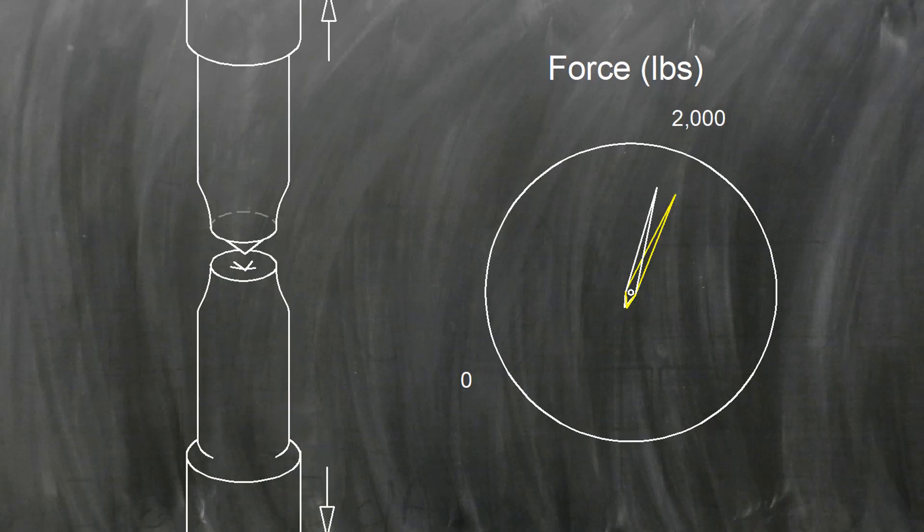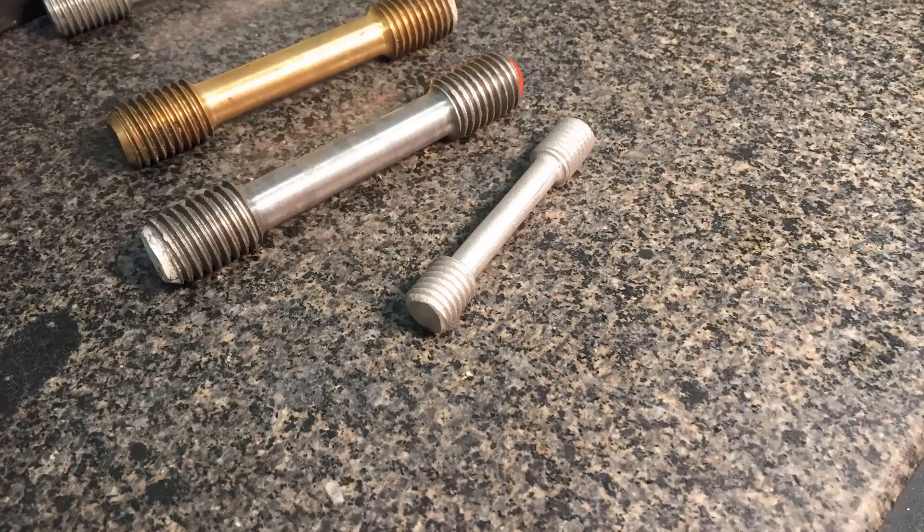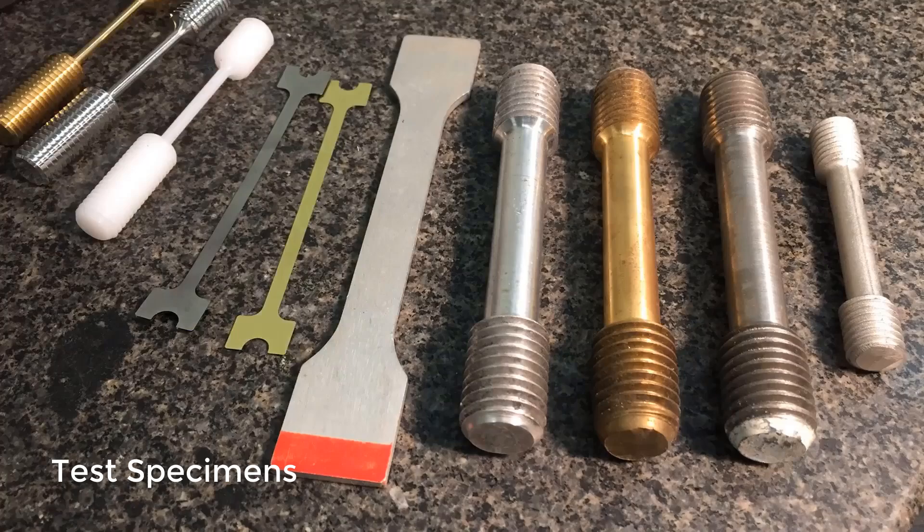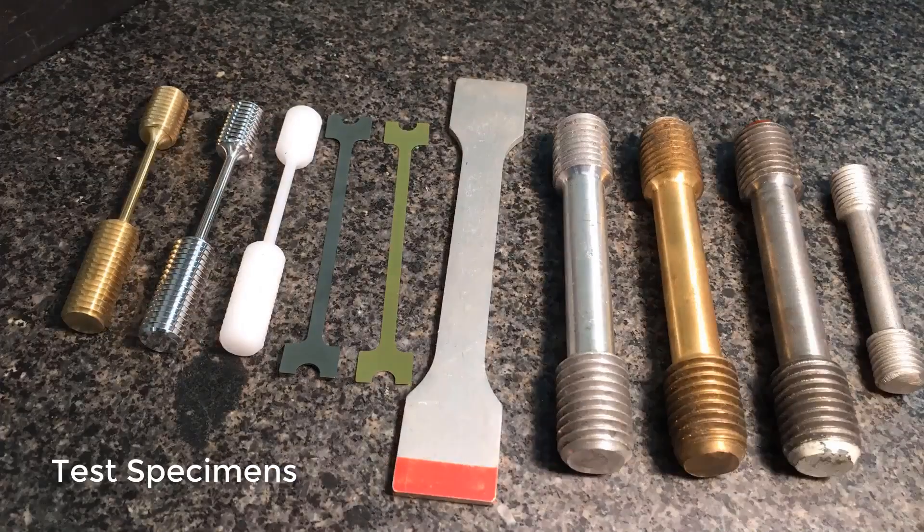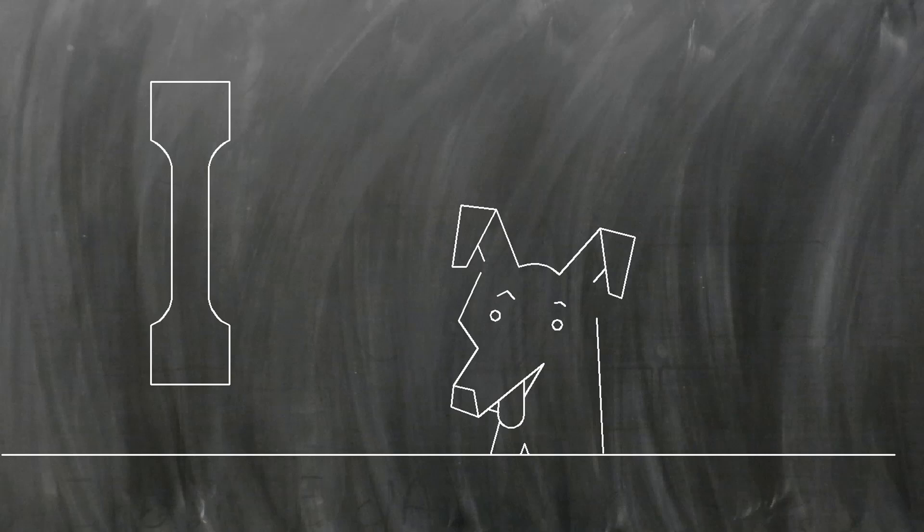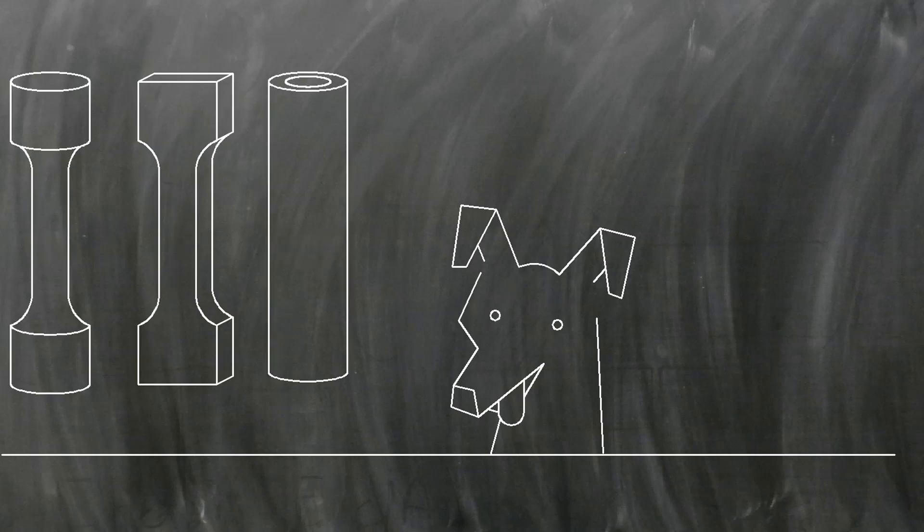To perform a tensile test we first need a sample of the material we're interested in testing. These samples are called test specimens and they usually look like little barbells. These specimens are often called dog bones because they're wider at the ends. This helps the specimen break in a predictable and repeatable way. The test pieces can be round or square or even tubular or other shapes.